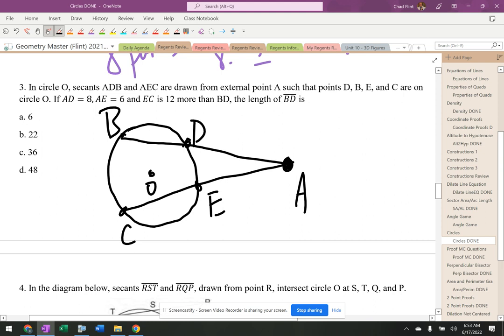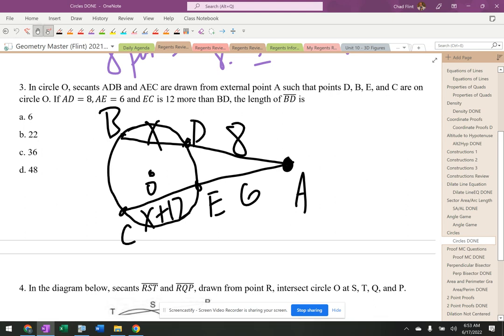Okay, so now obviously I don't draw the picture right, I can't get the answer right. Okay, AD is 8, AE is 6, EC is 12 more than BD, X, X plus 12. All right, X and X plus 12.